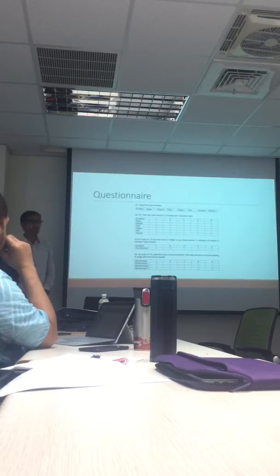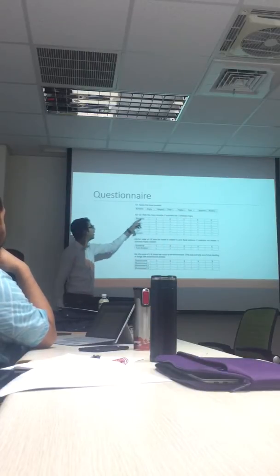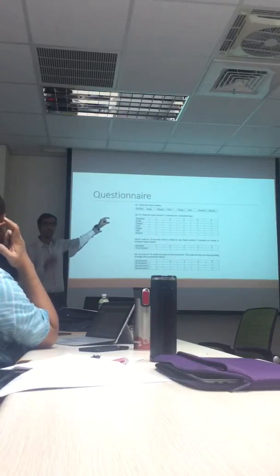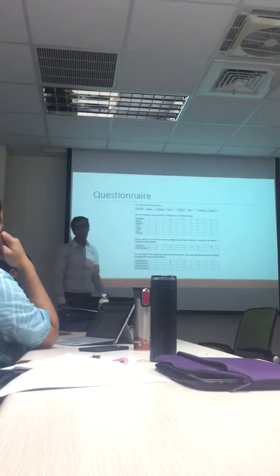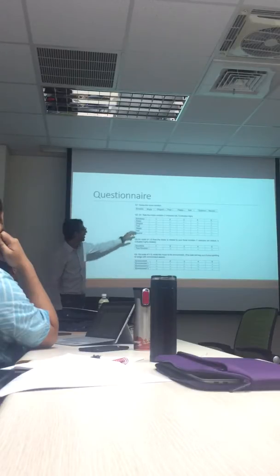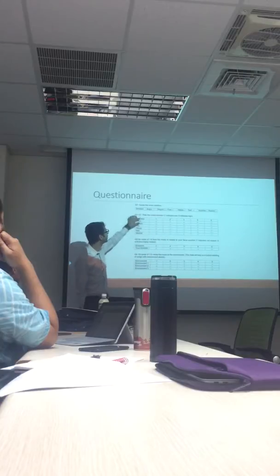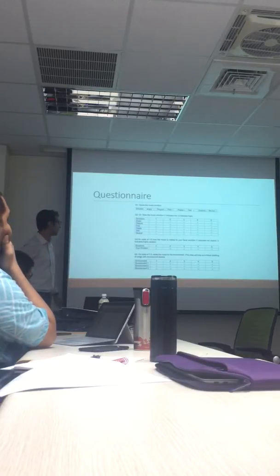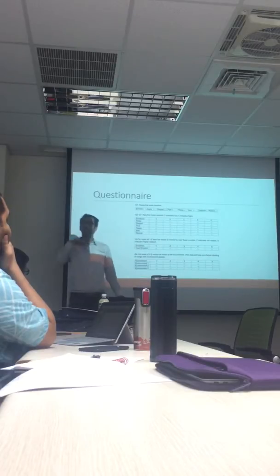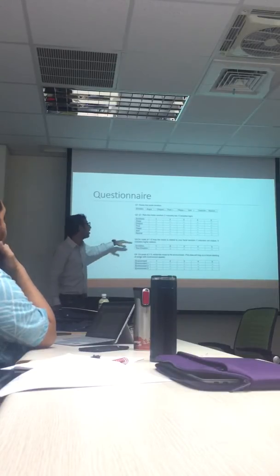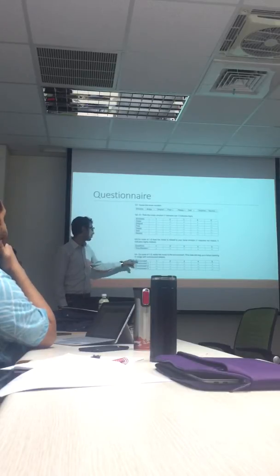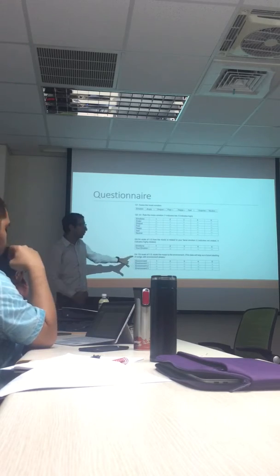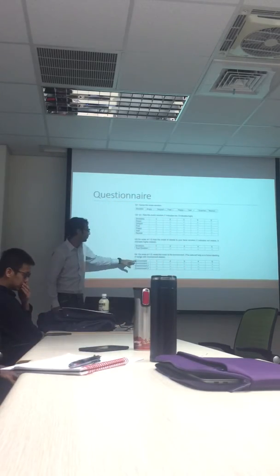The questionnaire has four questions. First, guess the music's emotion — whether the participant identifies it correctly. Second, rate the music emotion on a scale indicating percentage levels, such as 'two-level angry or two percent disgust.' Third, on a scale of one to five, rate how well the music relates to your facial emotion. Fourth, on a scale of one to five, relate the music to the environment — this data can then be used via backpropagation to retrain and improve the system.